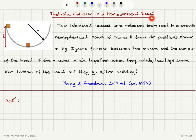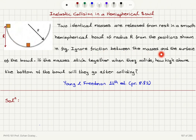Inelastic collision in a hemispherical bowl. Two identical masses are released from rest in a smooth hemispherical bowl of radius R from the positions shown in the figure. One is at the top, the other is at the bottom. Ignore friction between the masses and the surface of the bowl. If the masses stick together when they collide, how high above the bottom of the bowl will they go after colliding?